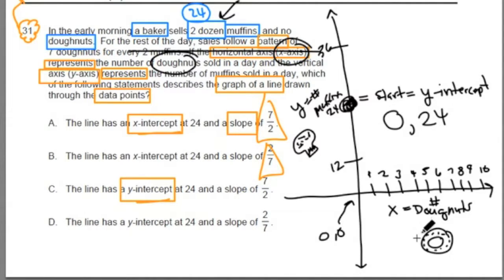Before they sell any doughnuts, we always have—when we write out these points, we always lead with the x, then the y. Before we sell any doughnuts, we've already sold 24 muffins. That's our start.